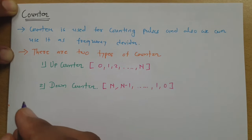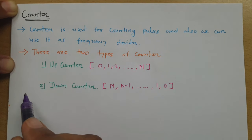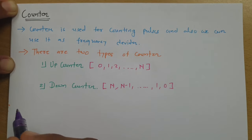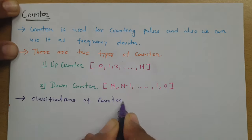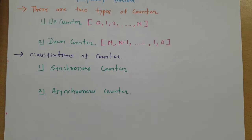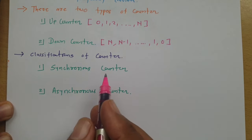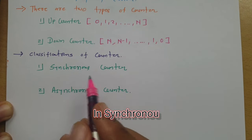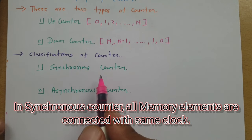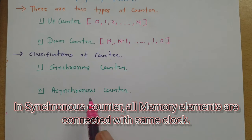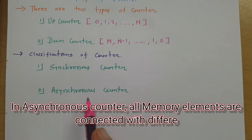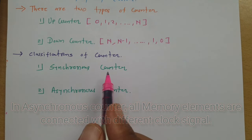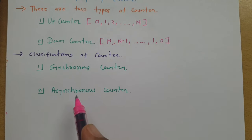Now let us look at the classifications of counters. We can classify counters into two categories: one is a synchronous counter and the second is an asynchronous counter. In a synchronous counter, we use flip-flops as memory devices and provide the same clock pulse to each flip-flop. In an asynchronous counter, all memory elements have different clock pulses.